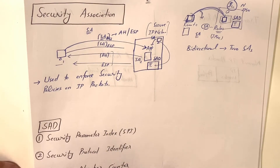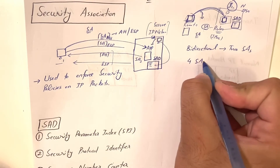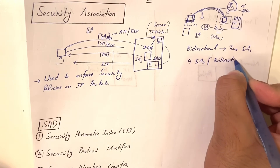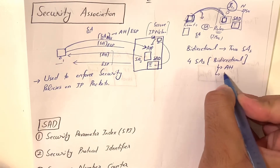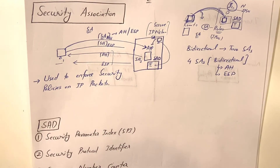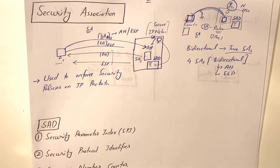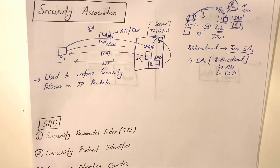For full implementation of IPsec including AH plus ESP, we need four security associations for bidirectional communication. Security association is kind of a contract that needs to be shared with all entities who want to communicate with each other — they have to agree with the security association rules.